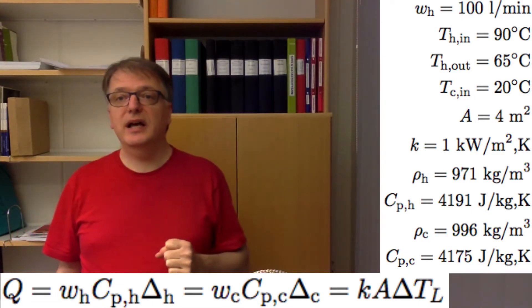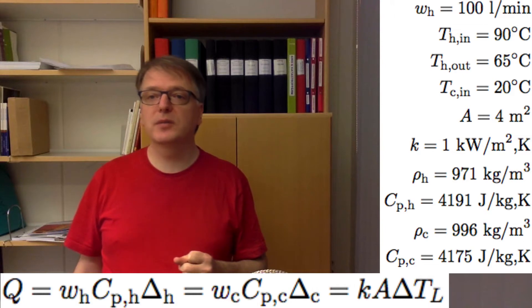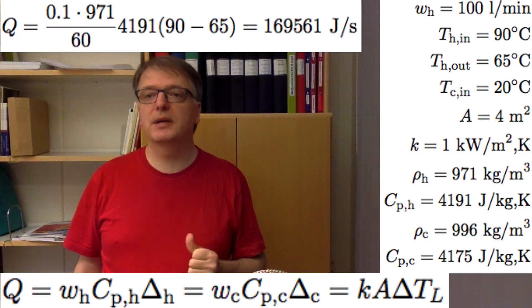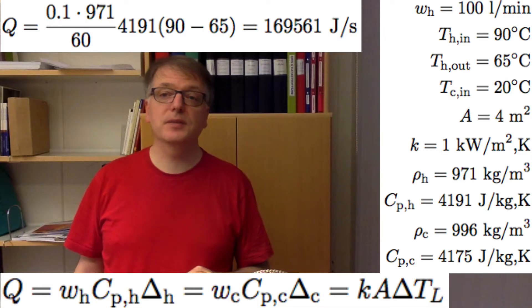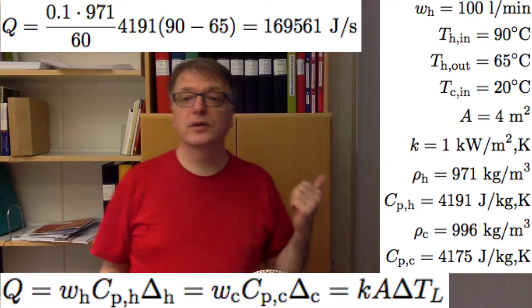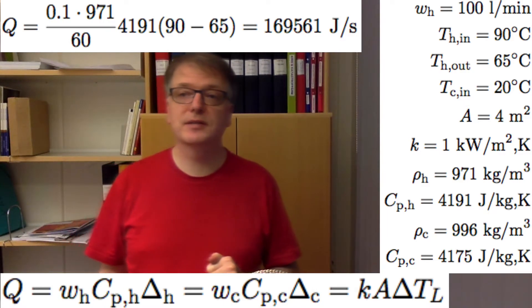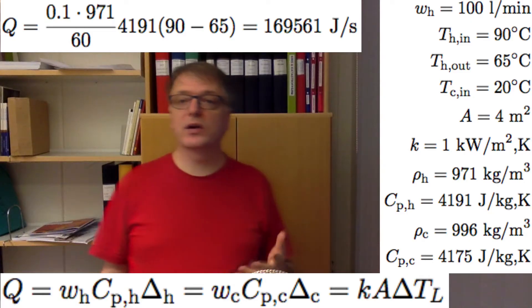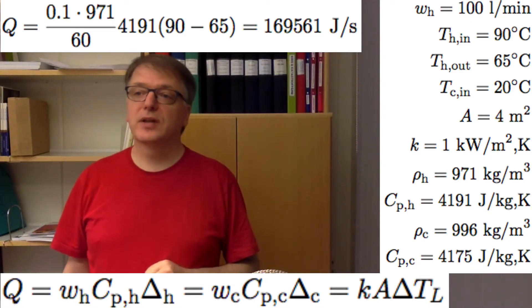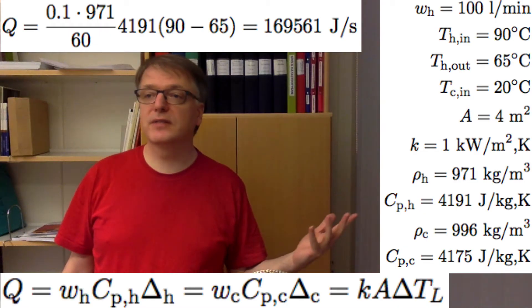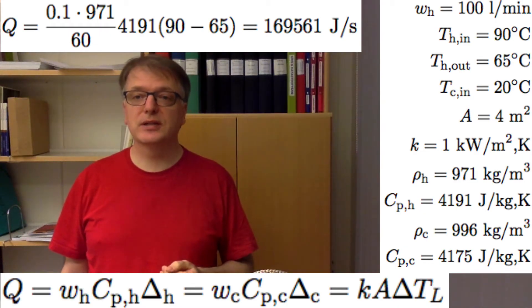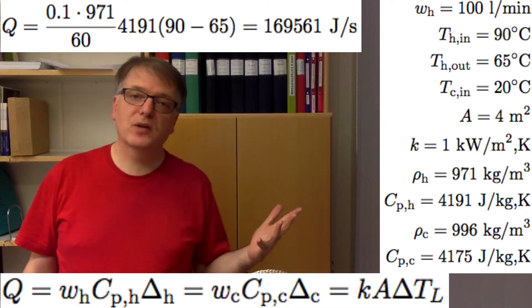So with the numbers we have, the hot medium is 100 liters per minute, so that's 0.1 m³/min times the density divided by 60 to translate it to kilograms per second. The change in temperature for the hot flow is 90 minus 65, that's 25 degrees. From that you can calculate the energy transferred, so that's approximately 170 kilowatts.